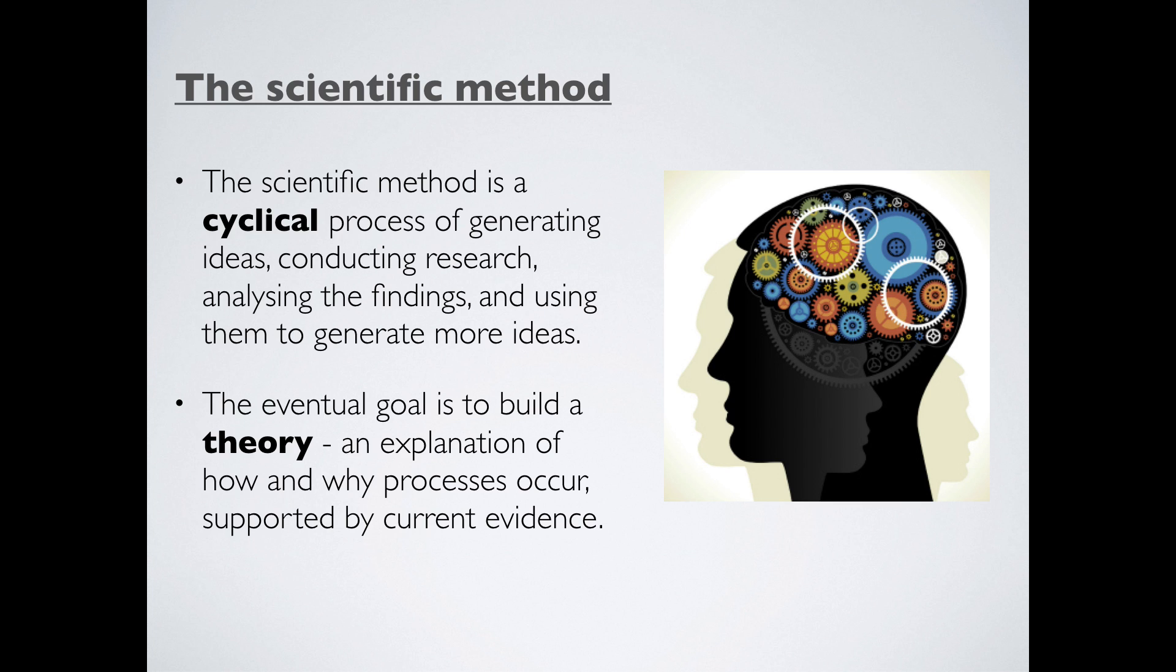The eventual goal of all science is to build a theory. Now, the word theory here is a bit difficult. We tend to think of the word theory as being a guess, a kind of best guess about something. That's not really what it means in science. A theory in science, we think about the theory of evolution, the theory of gravity, the theory of germs. The best way for me to explain this is that it's an explanation of how and why processes occur, which is supported by all the evidence we have currently.